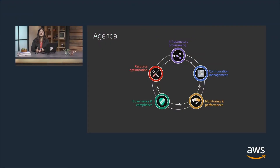Thank you, Siavesh. We are going to be covering a few topics throughout this presentation, and we also have a few demos prepared for you. When you think about operationalizing your Microsoft workloads, what comes to mind? For a lot of administrators, that might be things like provisioning infrastructure, building automation to provision your environment on AWS, patch management, remote access to configure your EC2 instances, backups, patching, monitoring, determining how your Windows and SQL servers are performing in the cloud, compliance, and resource optimization.